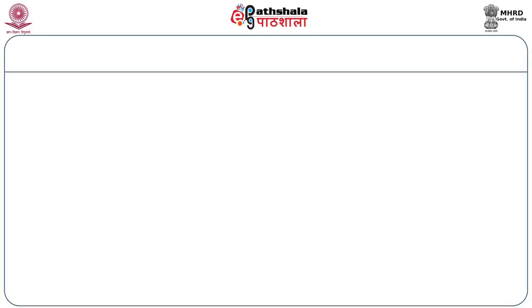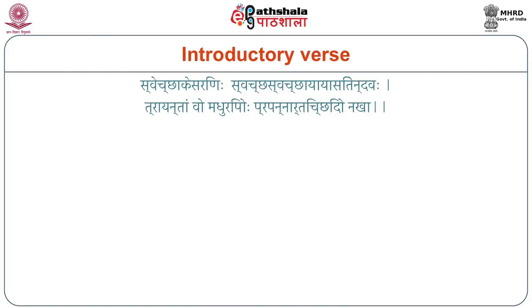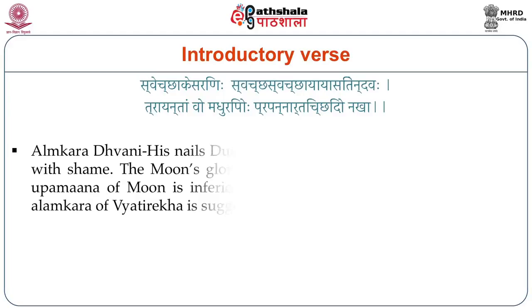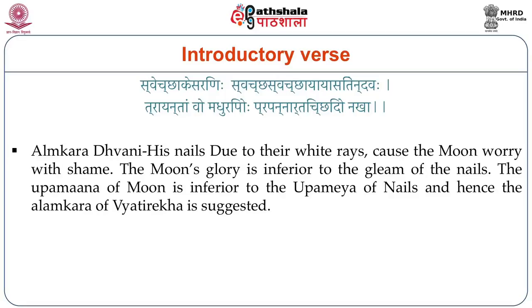The idea being suggested is that the nails of the Lord are enough to destroy the sufferings of the devotees — 'Madhuripo nakha, Prapannarthi chhada.' Here, 'Svecha kesarinaha nakha' implies the story of Prahlada. He describes the beauty of the nails of Lord Hari as 'Svaccha Svaccha Aayasita Indava' — the nails with their clear white rays are causing the moon to worry with shame. The moon's glory becomes inferior to the glory of the nails. The upamana of moon is inferior to the upameya of nails, and hence the Alankara of Vyatireka is suggested here.